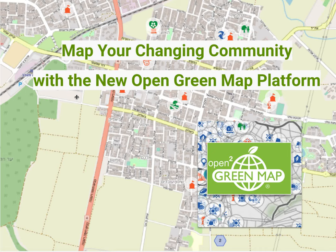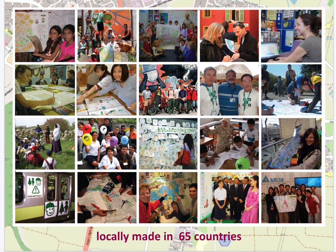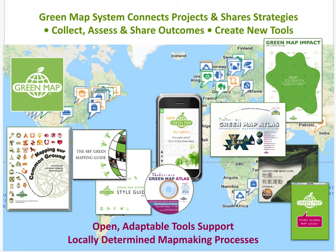Introducing the new Open Green Map. OGM2 is Green Map System's second open mapping platform, designed for community mapping. This platform is ready for all kinds of mapmakers, from students to professionals, who want to draw attention to sustainability in their own city or town. It draws upon our 25 years of creating mapmaking resources for and with local green map project leaders in 65 countries.